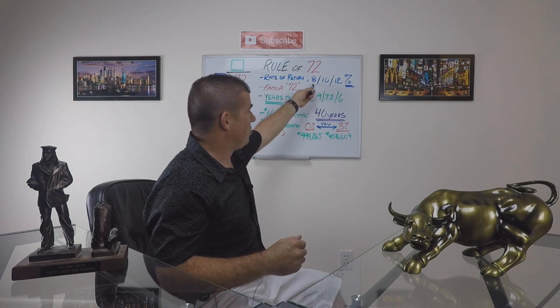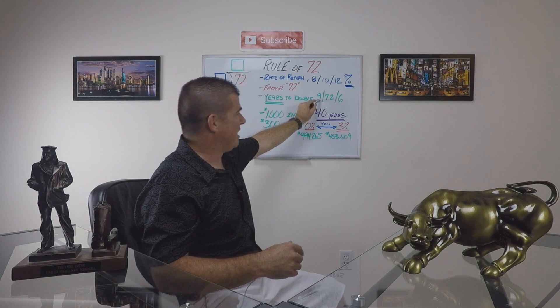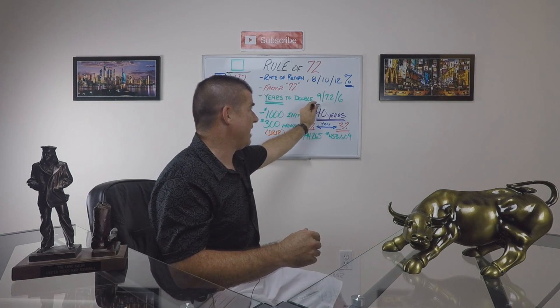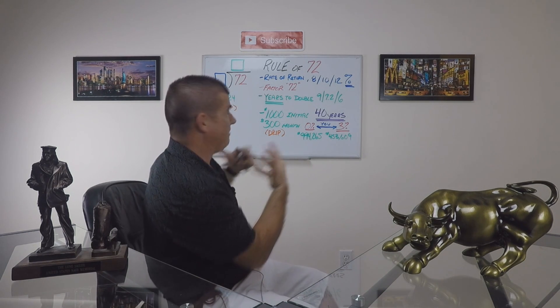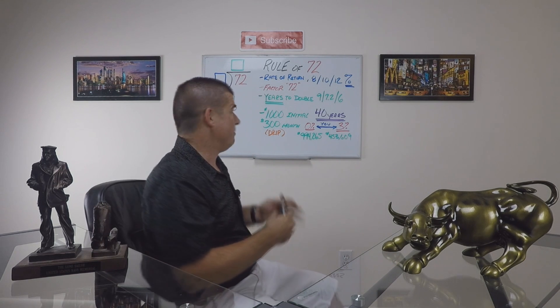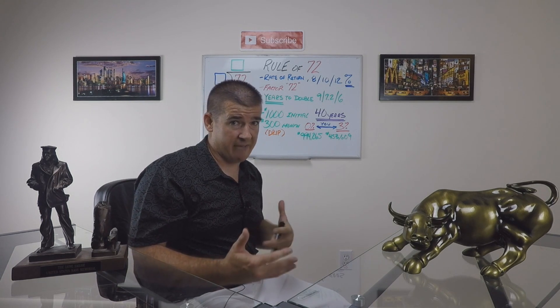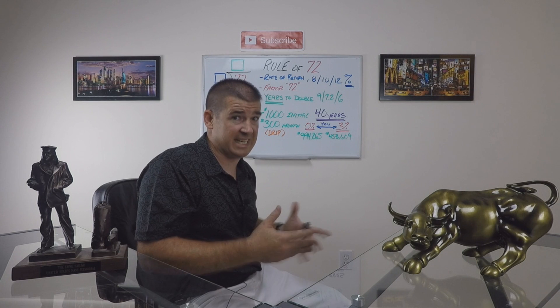If you are 20 years old and you go ahead and take this 8% anticipated rate of return over the course of your life, it's basically going to take nine years for your money to double. So if you're 20 and you start investing, by age 29 your money will have doubled. Then you add another nine years on top of that, and another nine years on top of that. That gives you an indication of how many doubling cycles you have — a 20-year-old could get five or even six doubling cycles.